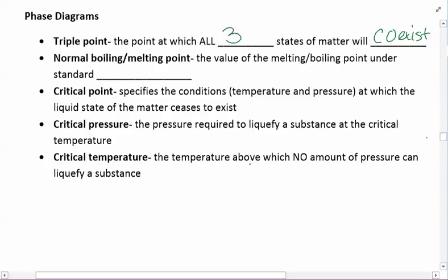The normal boiling point or melting point are a value of melting and boiling under standard pressure, which standard pressure is 1.00 atm or 101.3 kilopascals.